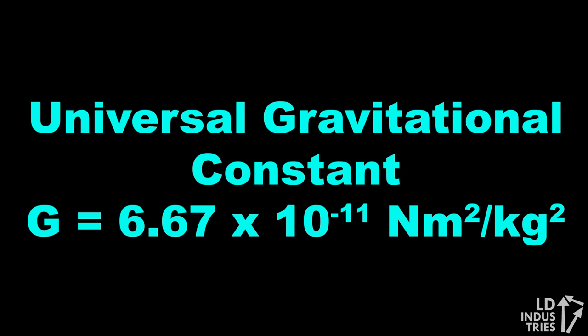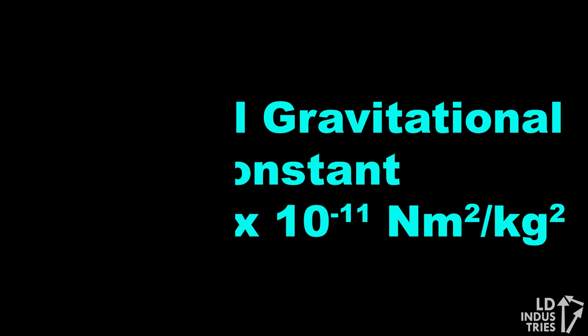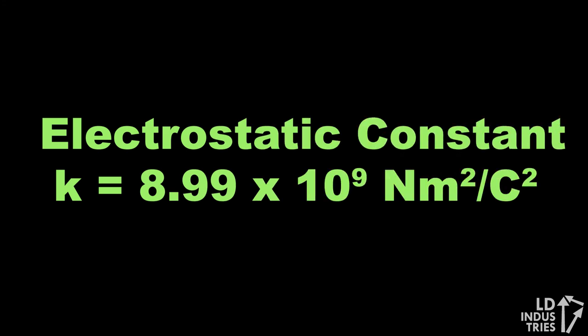From Cavendish's data, the universal gravitational constant found in Newton's law of universal gravitation was derived, and in a similar fashion, Coulomb's data allowed for the determination of the electrostatic constant in Coulomb's law.